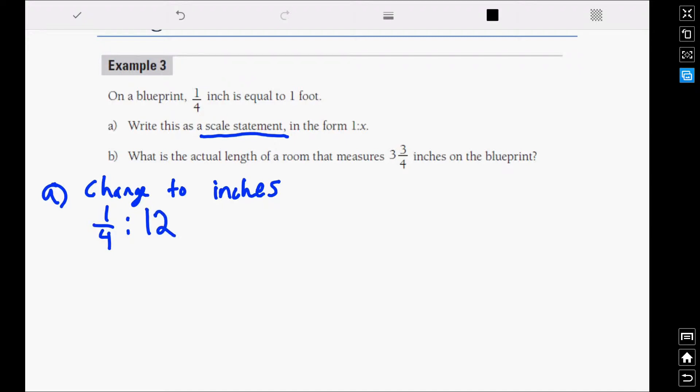Now, in order to change, to get rid of that one quarter inch equals 12 inches, we'll just multiply this side by four and then we'll multiply this side by four. That will get rid of the fraction, so those fractions will cancel out. So we'll go after the one, and on this side we have 48. So this is the scale statement, 1 to 48, or you could write it as 1 over 48.